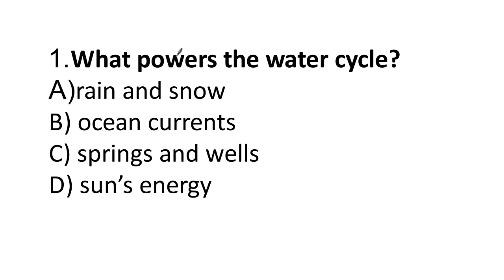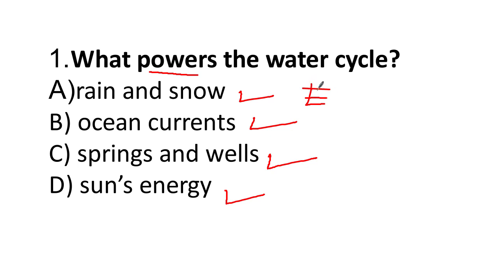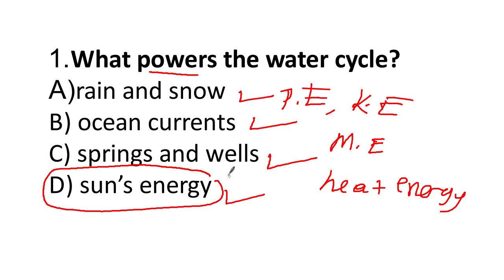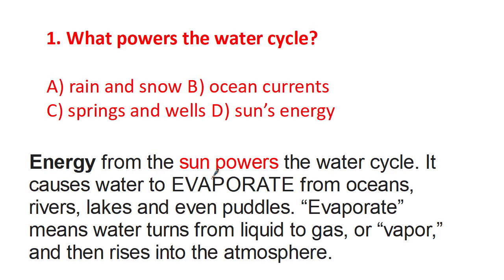Question 1: What powers the water cycle? The options are rain and snow, ocean currents, and sun energy. The answer relates to energy. There are different kinds of energy — potential energy, kinetic energy, mechanical energy, heat energy, electricity energy. Here the answer is sun energy, which powers the water cycle.